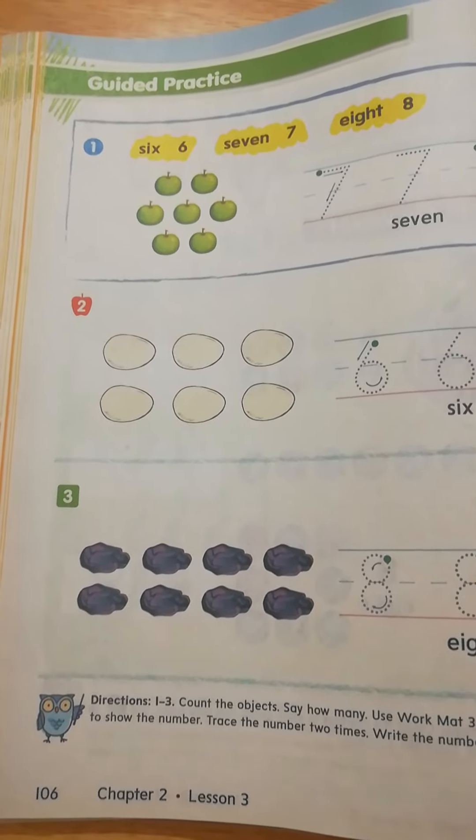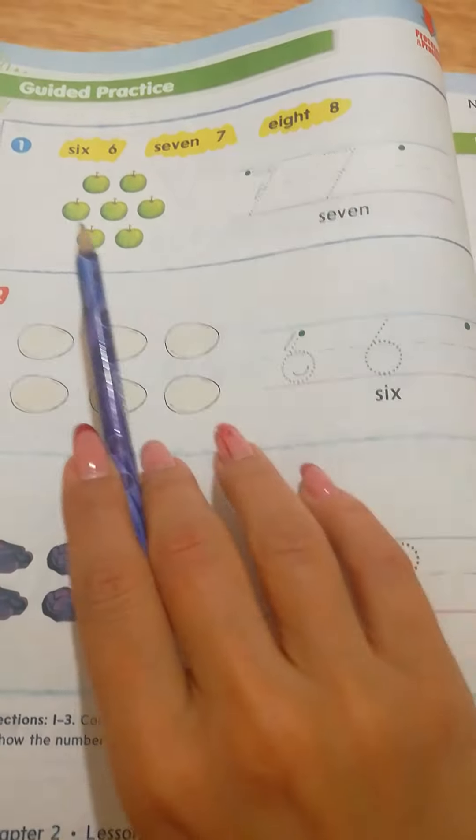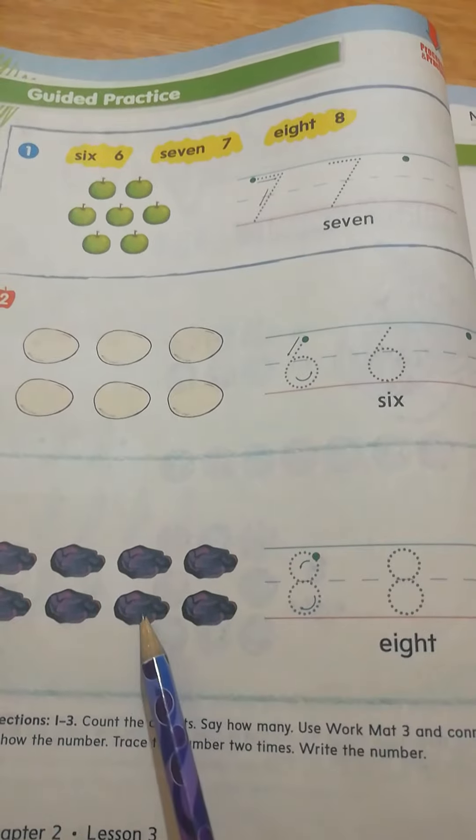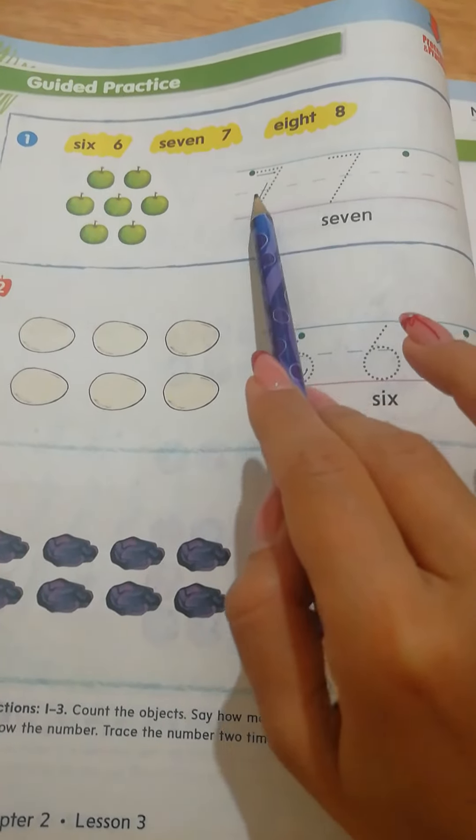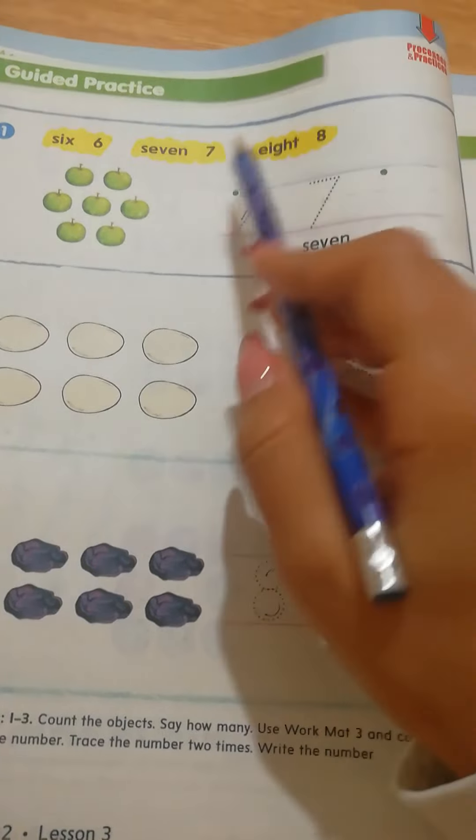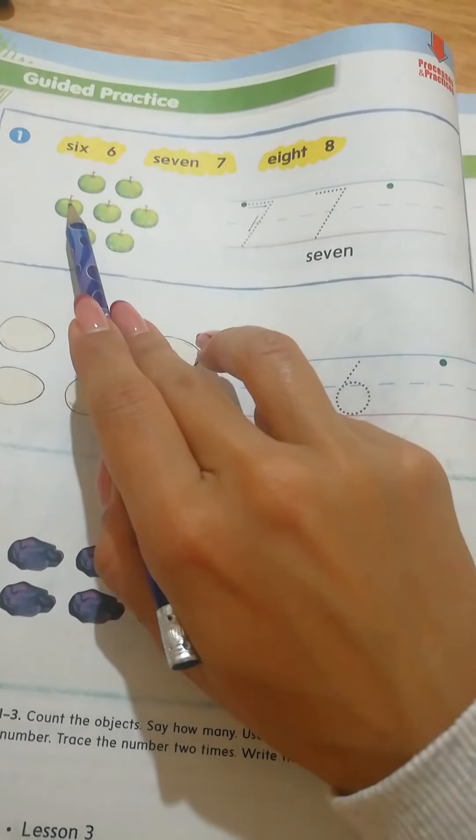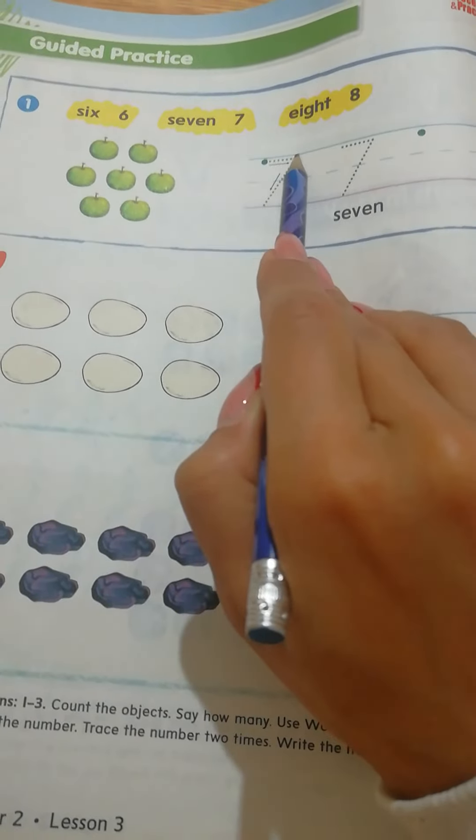And now we have to solve page 106. Count the objects in each group, then write the number. First we have to trace the number, then we write it on the third dot. So here we have 1, 2, 3, 4, 5, 6, 7 apples. We trace 7.